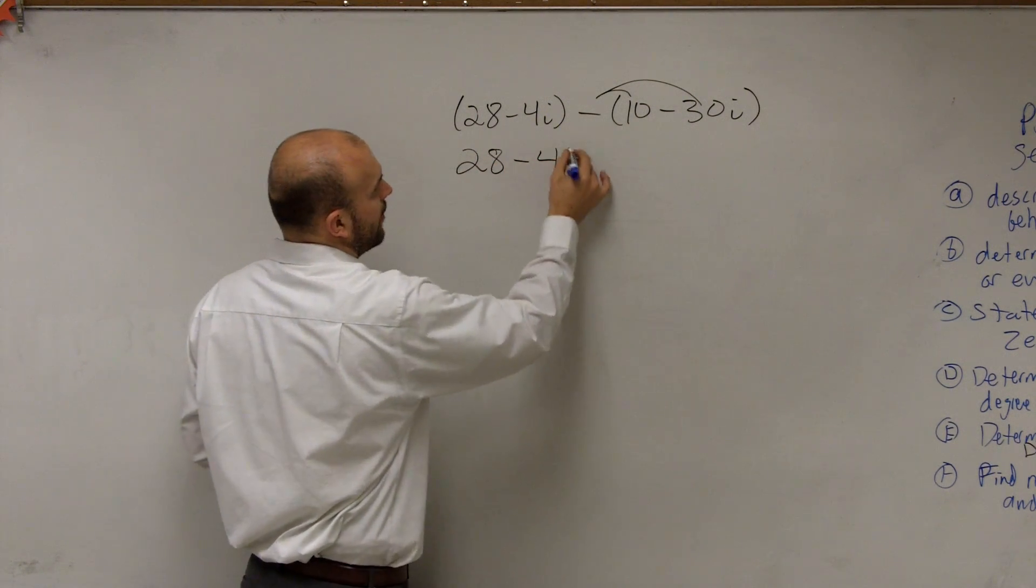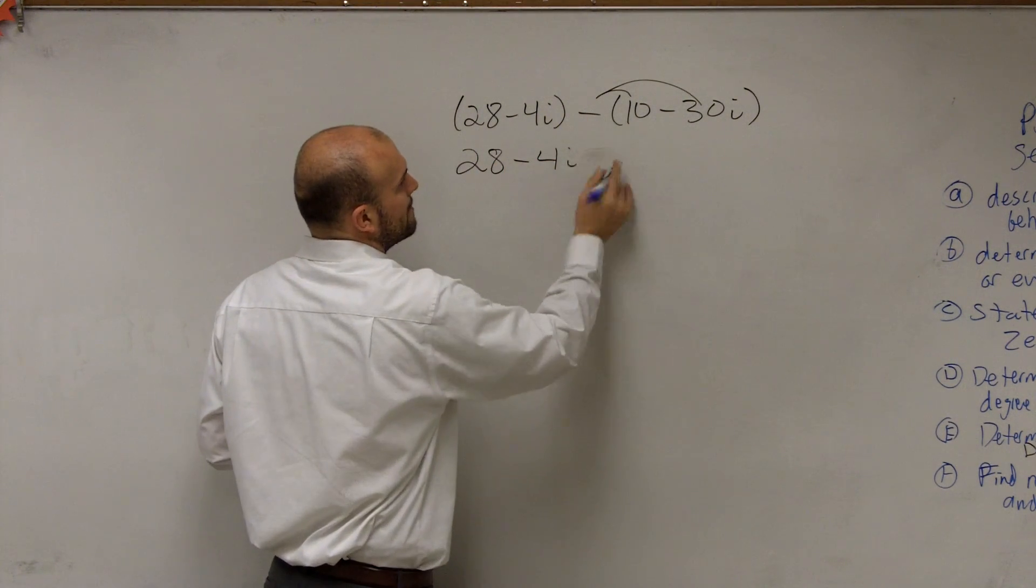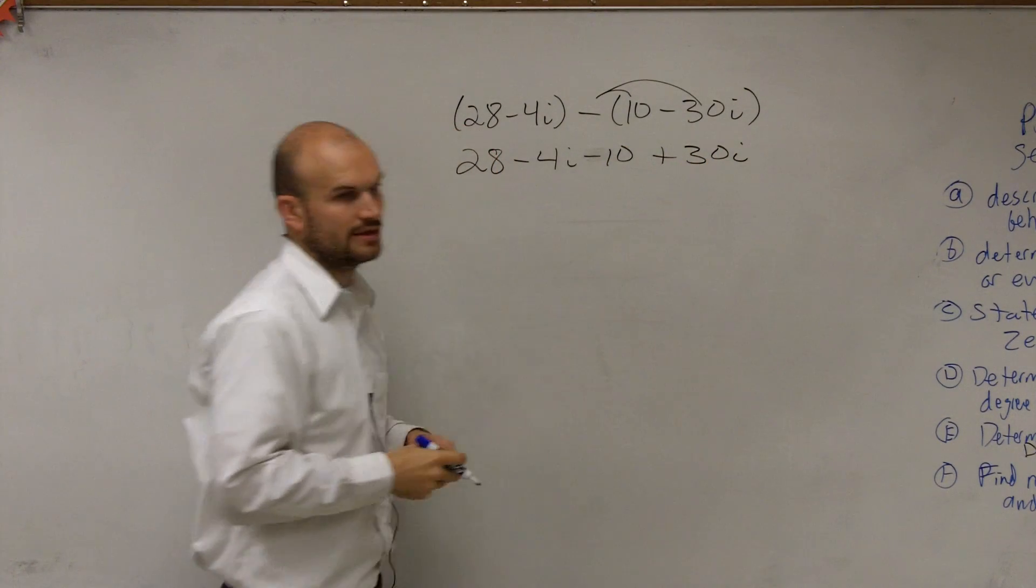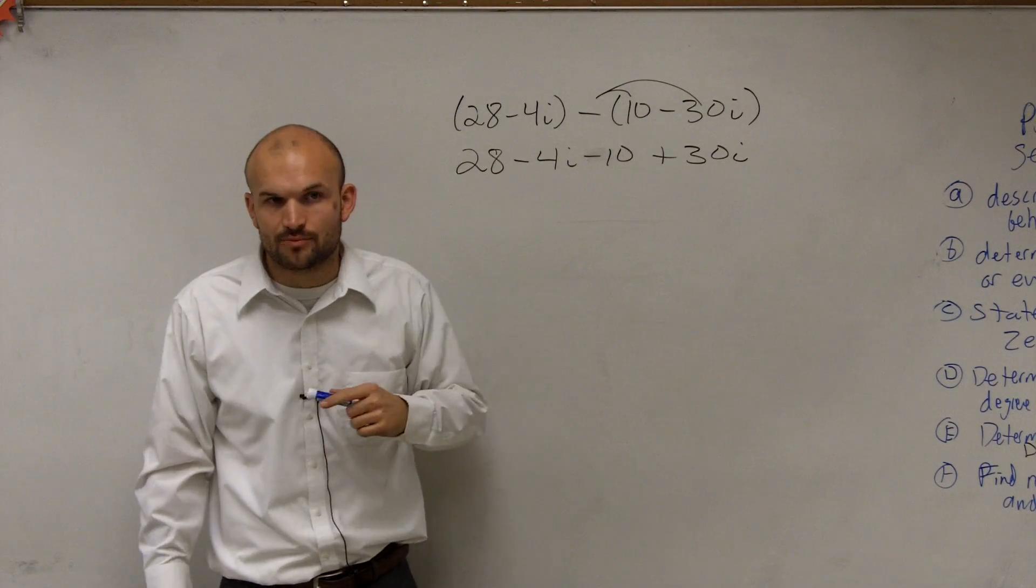I'm going to have 28 minus 4i, now minus 10 and then plus 30i. OK, so distribute that negative sign. So now you have an addition problem.